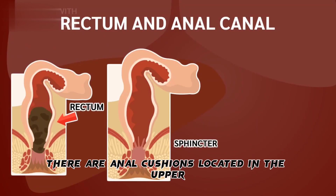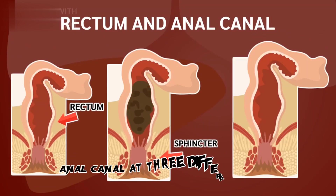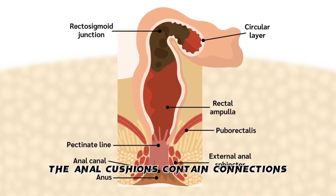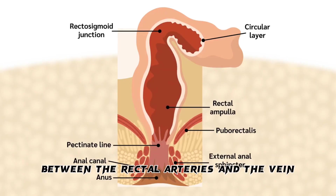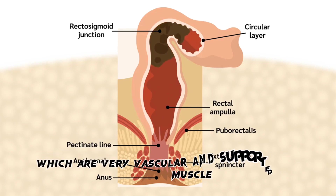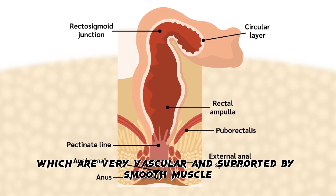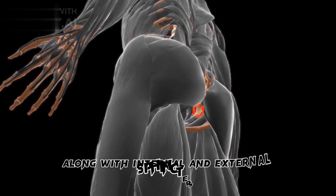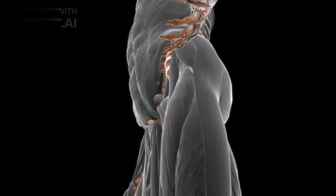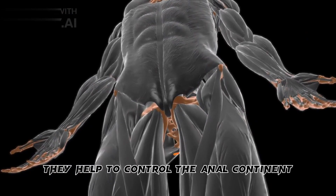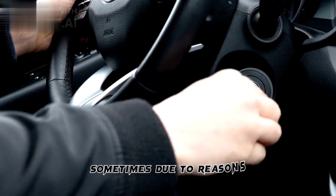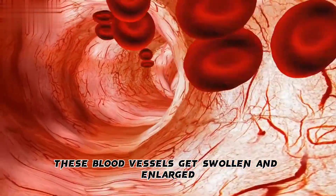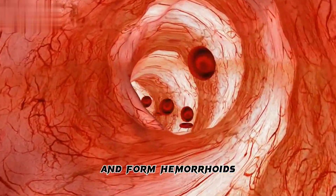There are anal cushions located in the upper anal canal at three different sites. The anal cushions contain connections between the rectal arteries and the veins, which are very vascular and supported by smooth muscle and connective tissue. Along with internal and external sphincters, they help to control anal continence. Sometimes, these blood vessels get swollen and enlarged and form hemorrhoids.